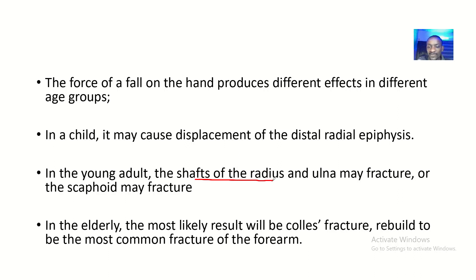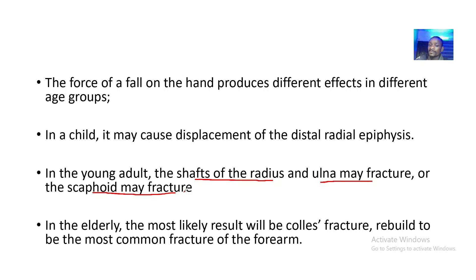In an adult, the shafts of the radius and ulna may fracture, or the scaphoid may fracture. The scaphoid is part of the carpal bones. Look at your atlas to locate the scaphoid, radius, and ulna — the shafts, meaning the body of these bones, might be ruptured.